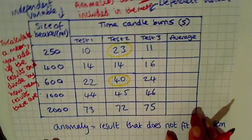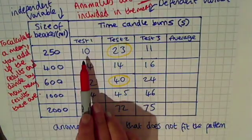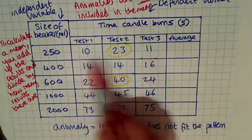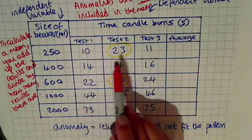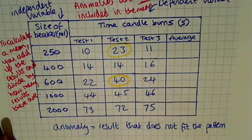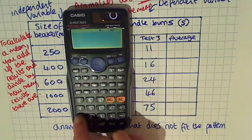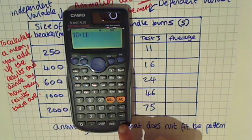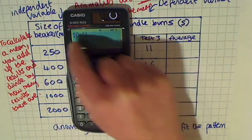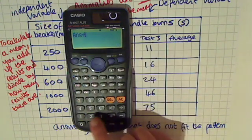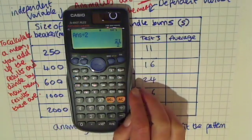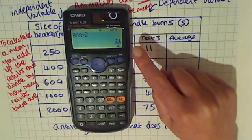For example, in the first case, we are going to take the results 10 plus 11, and because we've taken two results, we need to divide that by two. So if you take your calculator, you will need to do 10 plus 11 and then press the equals button. That's really important. And then because we've got two numbers, we divide by two.